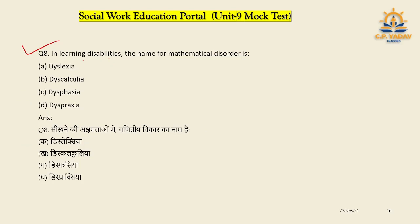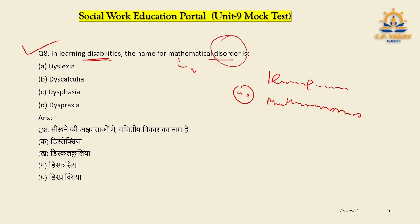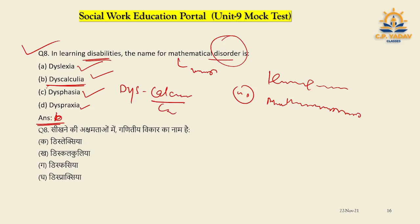Question number eight: In learning disability, what is the name for the mathematical disorder? If a person is unable to perform mathematical calculations, what type of disability or disorder is it called? Options include dyslexia, calculator, dysgraphia, and dyscalculia.